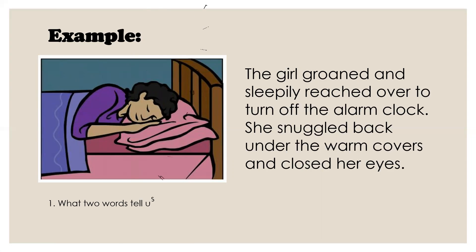Here's your first question: what two words tell us how the girl feels? The girl groaned and sleepily reached over, turned off her alarm clock, got back under her covers, and closed her eyes to go back to sleep. She probably does not want to get out of bed. The two words that show us that are 'groaned' and 'sleepily.'